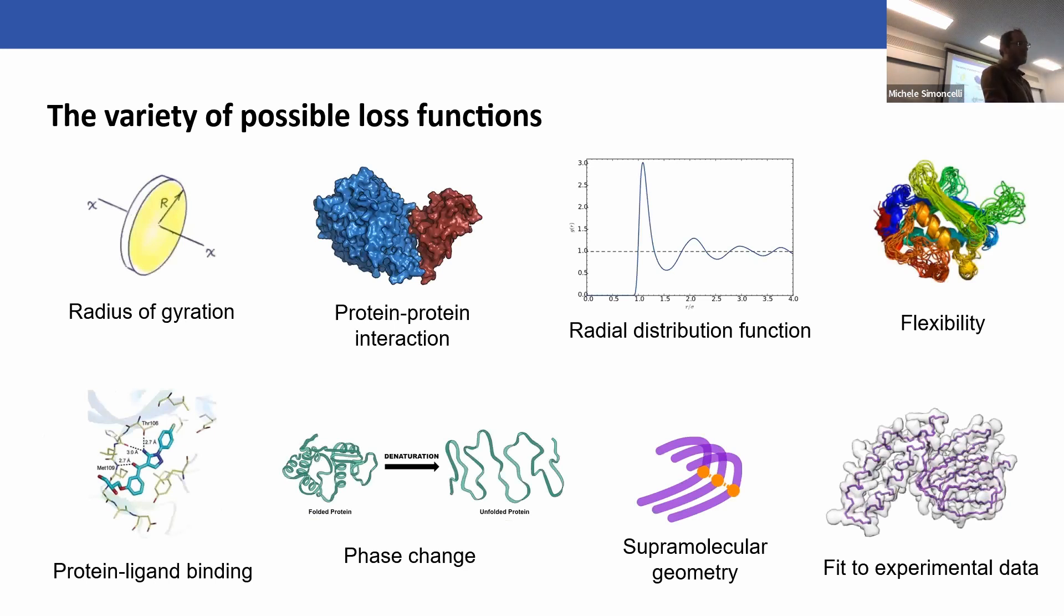First I'll talk about the loss function. I think the attractive thing here is the variety of loss functions you can target. Our current force fields are deficient in a number of ways, but using this differentiable scheme you can target the radius of gyration - that's how compact a protein is. You can target interactions, you can target a radial distribution function. You might know that some parts of the protein are flexible. Or you can target protein-ligand binding for virtual screening, phase changes, things like amyloid aggregation. And we're seeing an explosion of cryo-EM data for instance that you can use to try and fit as well.